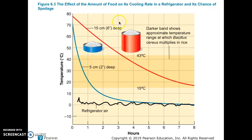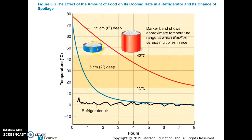This is based on actual research measuring how fast things cool down. A big bowl of rice coming off the stove placed in the fridge in one large container cools down very slowly — even eight hours later the center may still be in that danger zone of intense bacterial growth.